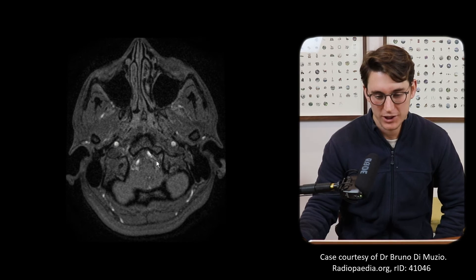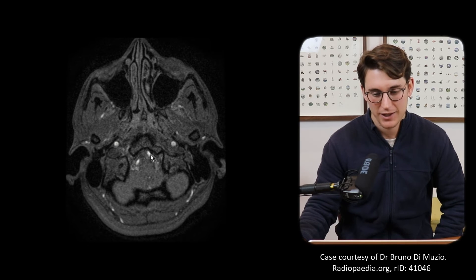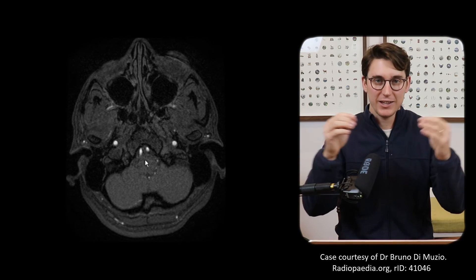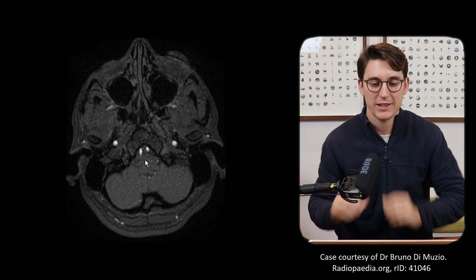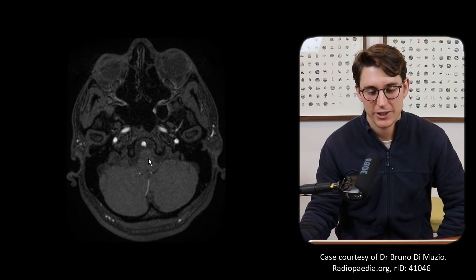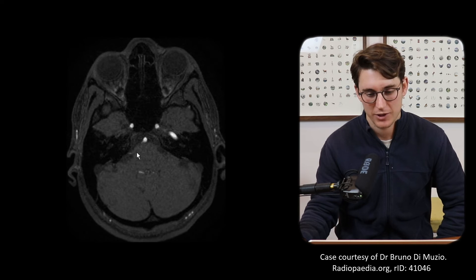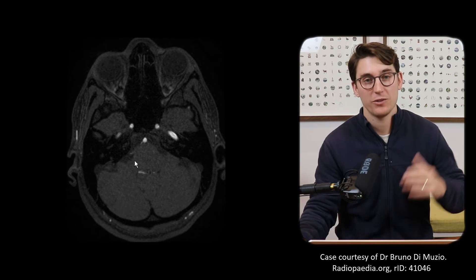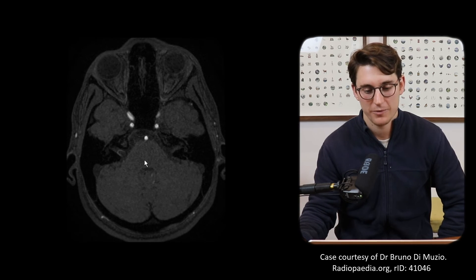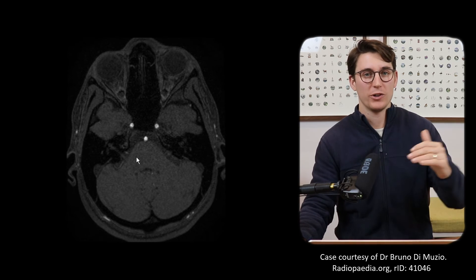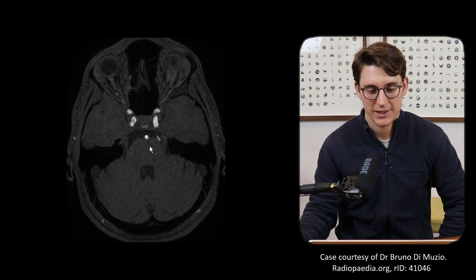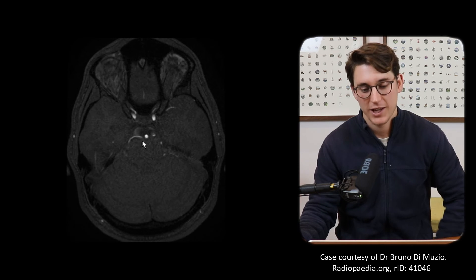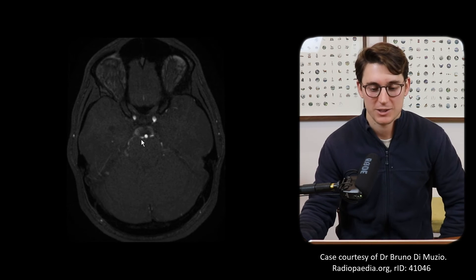The start of this image is a bit poor quality but we can just see our posterior inferior cerebellar arteries coming off. As we head more superiorly, either off the end of the vertebral arteries or the base of the basilar, we see our anterior inferior cerebellar arteries - there's the left one, there's the right one - supplying the inferior anterior portion of our cerebellum. Heading further up, we see our superior cerebellar artery coming in under the tentorium over the superior aspect of the cerebellum.